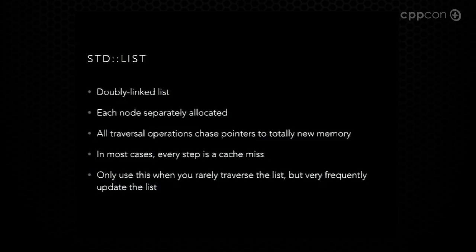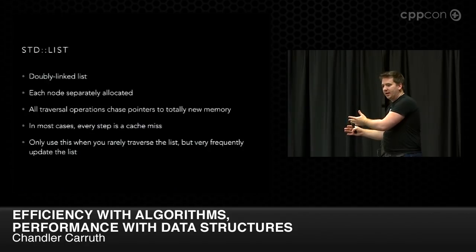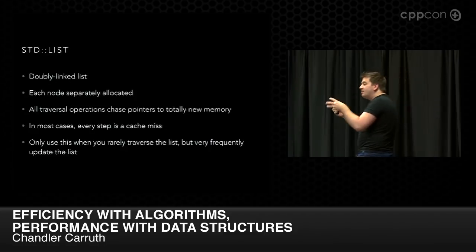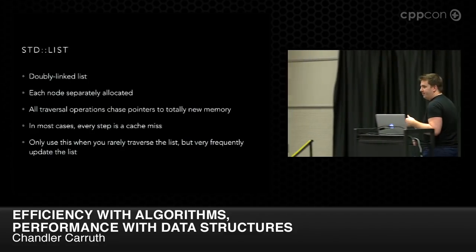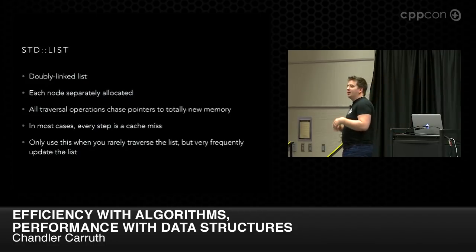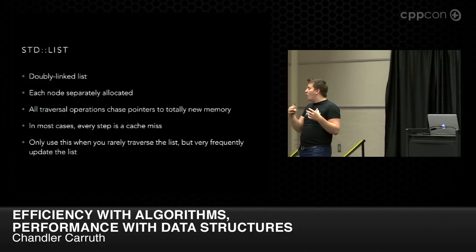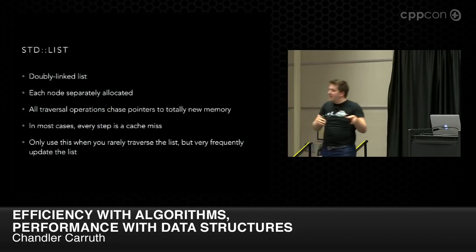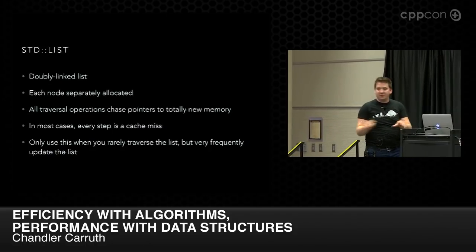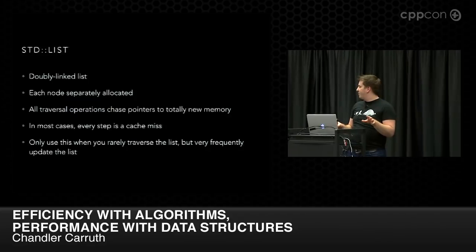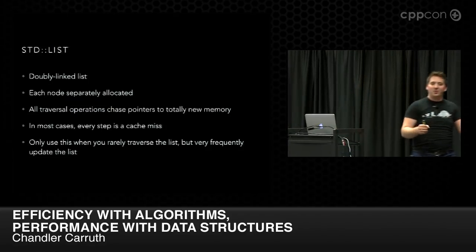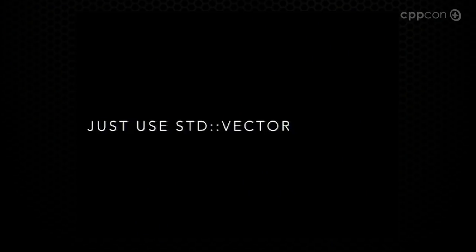Standard list does have a good use case: if you very rarely traverse your data structure — algorithmically rarely — it can be useful for improving the algorithmic properties of updating the structure. That's where a linked list shines. But if you traverse your data structure on the same order of magnitude as you update it, you should never use linked lists. Just use std::vector — that's what it all comes down to. It's better.